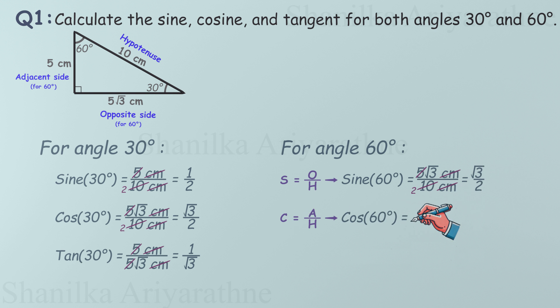Cosine of 60 degrees: adjacent by hypotenuse, 5 over 10, simplifying to 1/2. And tangent of 60 degrees: opposite by adjacent, 5√3 over 5, which simplifies nicely to √3.